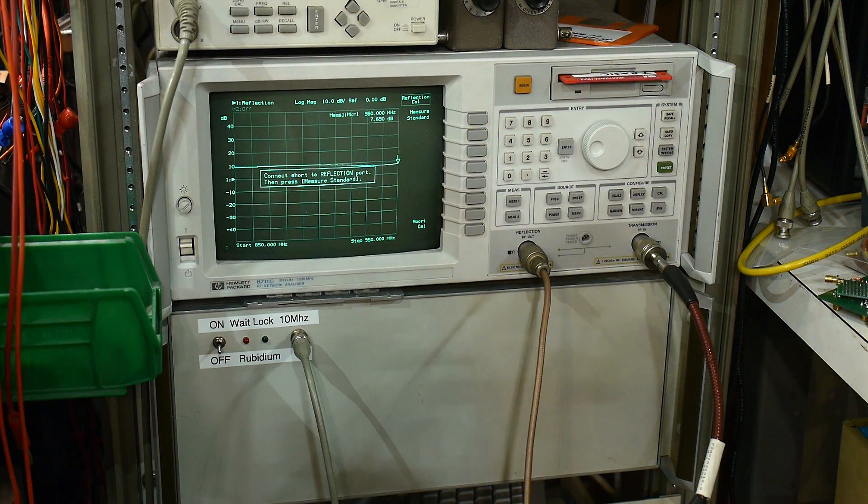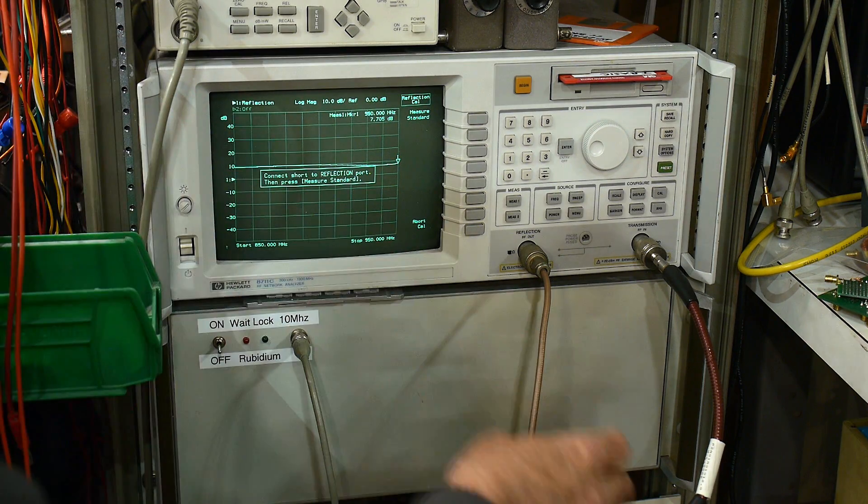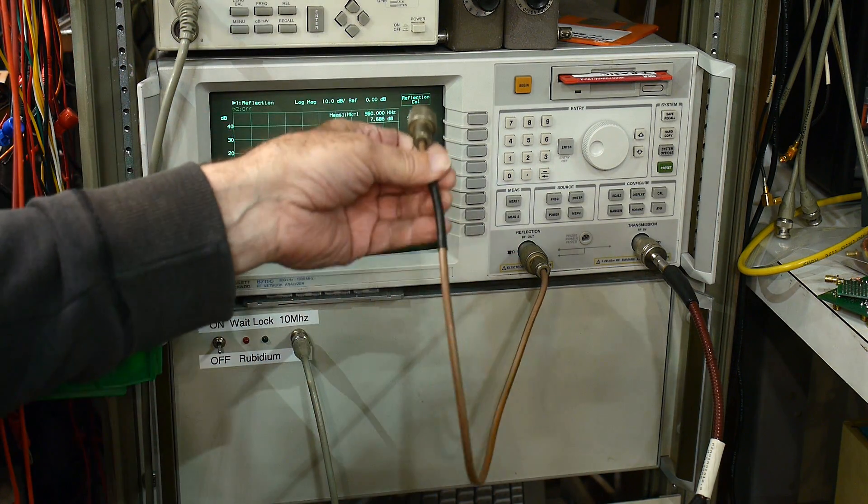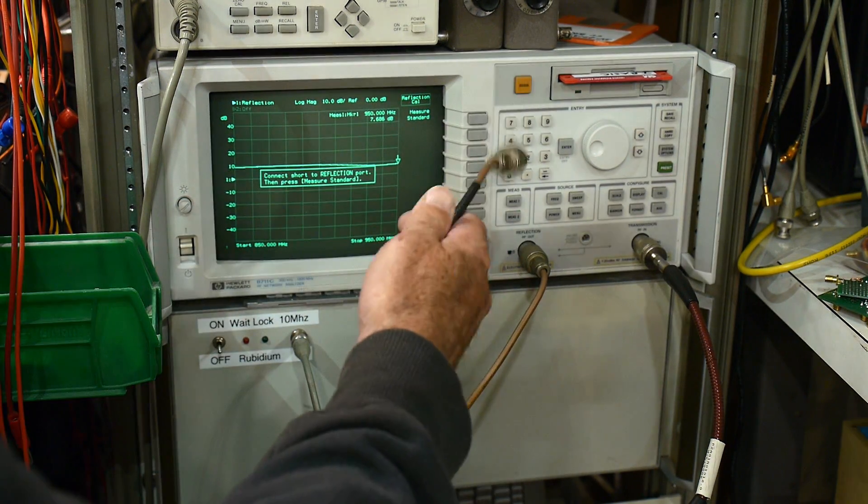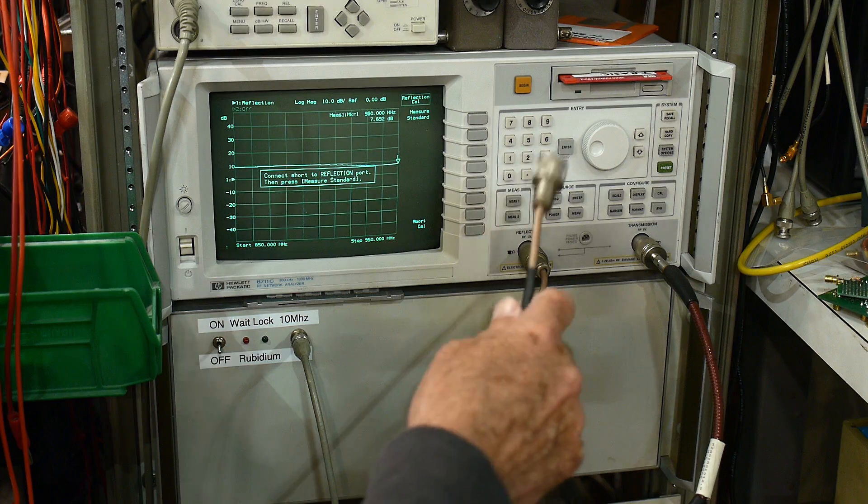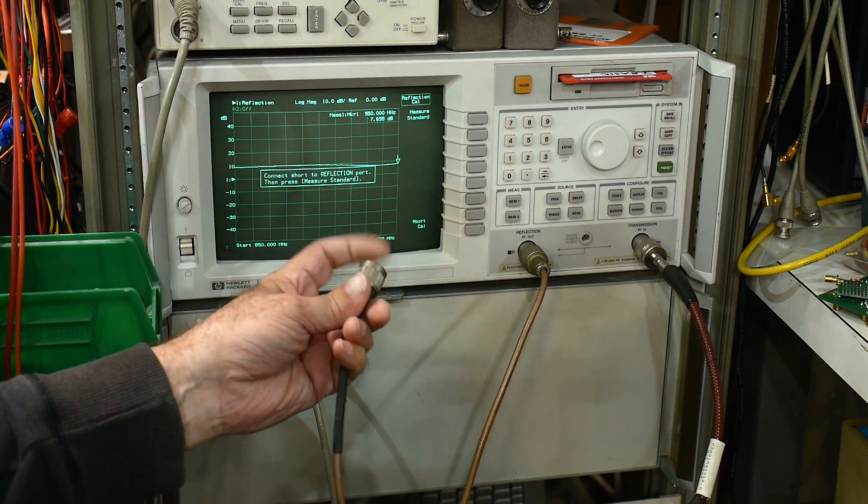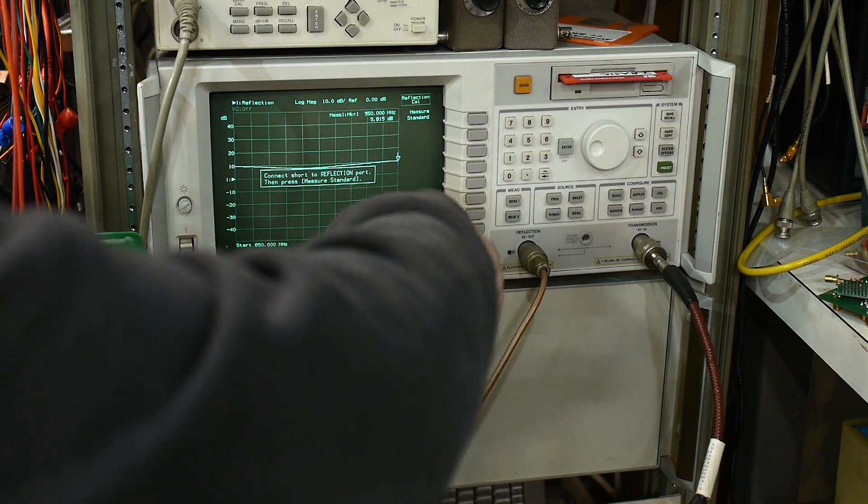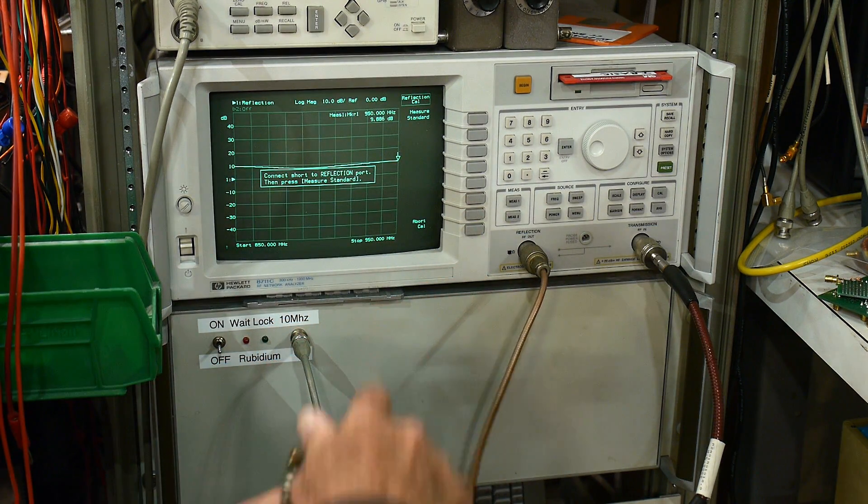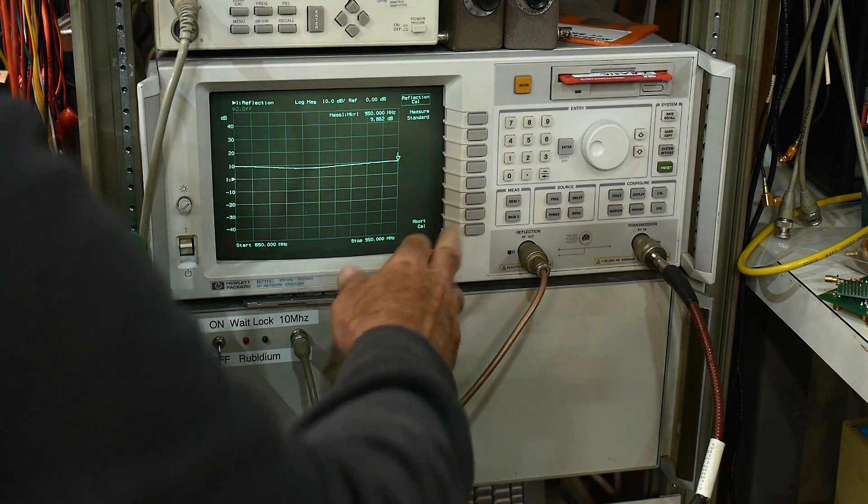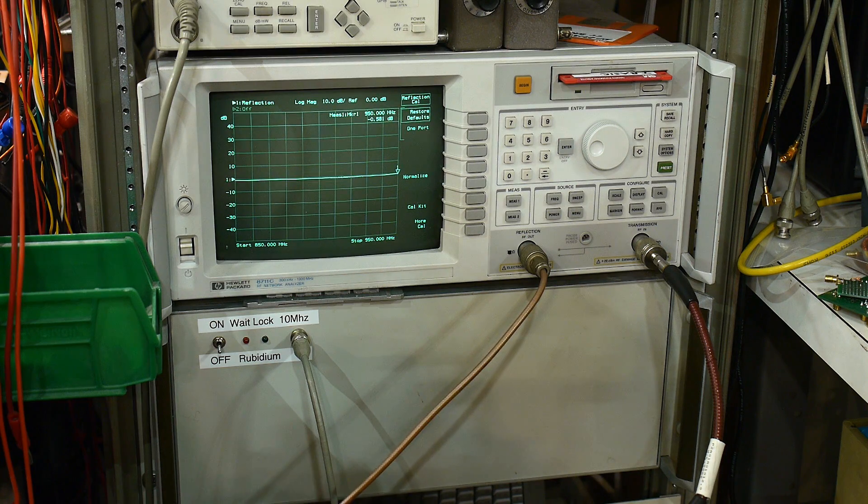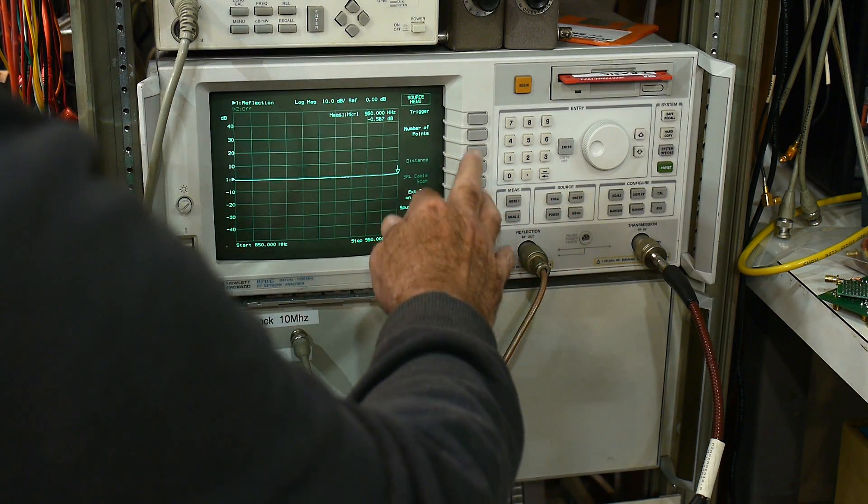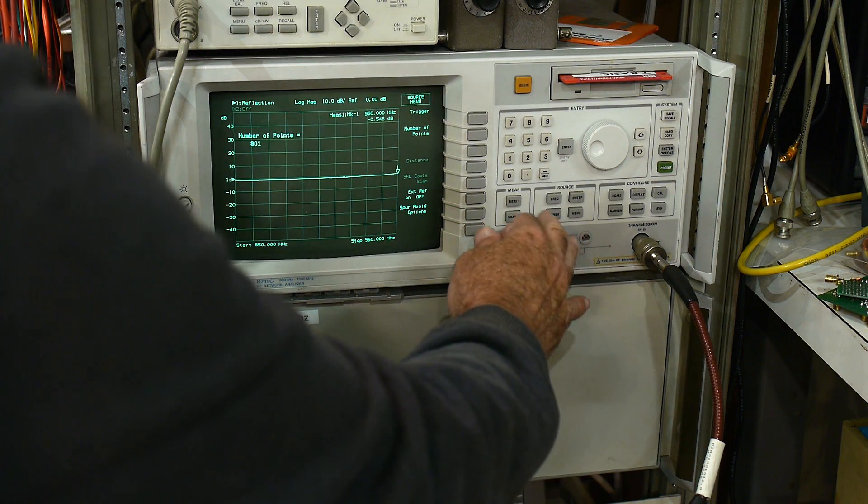I'm going to be testing this with an 8713 vector network analyzer. The antenna is going to be over here. We're going to calibrate at the end of the test cable. I have a high precision Pomona brand N to N cable and I don't have any N standards so we will use an adapter and calibrate to SMA. I'm going to be calibrating between 850 megahertz and 950 megahertz using 801 points across that, so that'll give us a really good resolution.